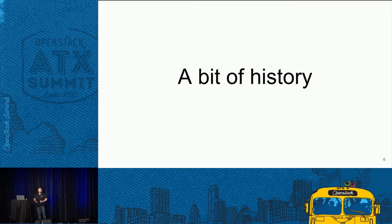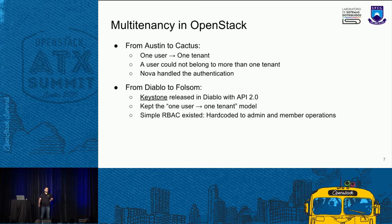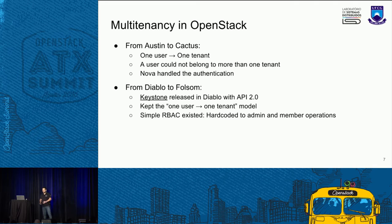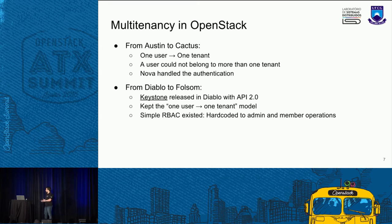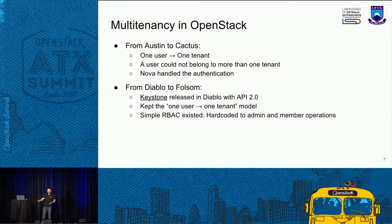A little history of how multi-tenancy has been evolving in OpenStack. At the beginning, from Austin to Cactus, we had a very simple model: one user, one tenant. A user could not make an operation in a different tenant than the one it belongs to. Nova was still the responsible component for authentication. Then at the Diablo release, we introduced Keystone, and together we made the API v2.0, which was the first Keystone API. This beginning of Keystone still held the same model of one user, one tenant. We still had a very simple role-based access control model, which were hard-coded to admin and member operations.